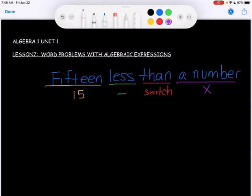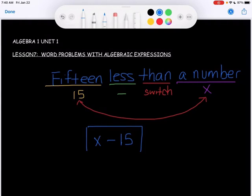Right now, it looks like we would do 15 minus X. But because of that switch, I need to switch the values on each side of the subtraction sign. So I need to switch the 15 and the X, which gives me X minus 15, which is your final answer. And that represents 15 less than a number.